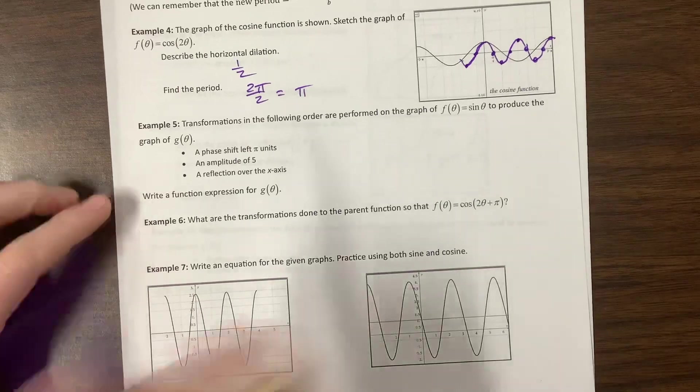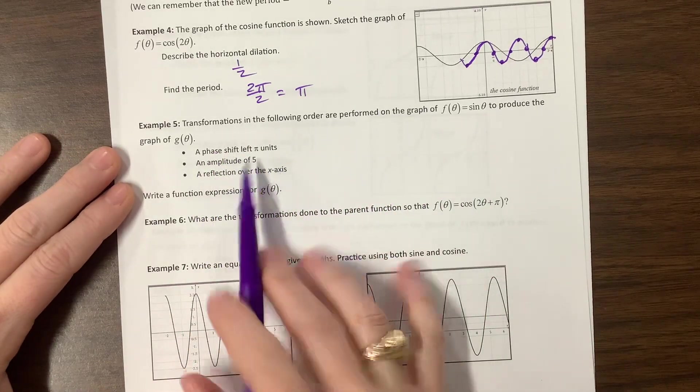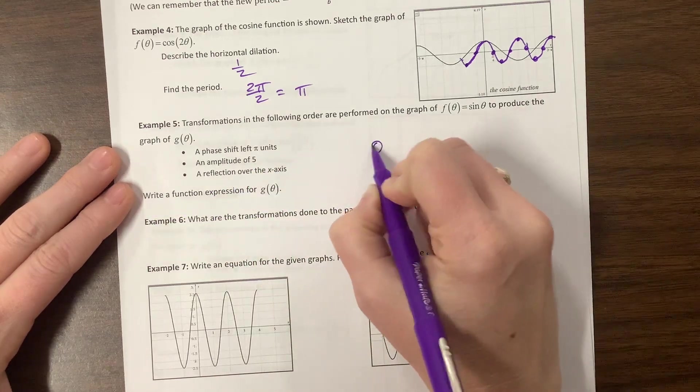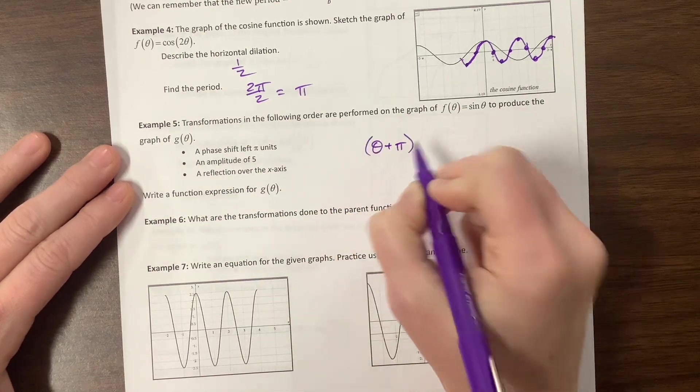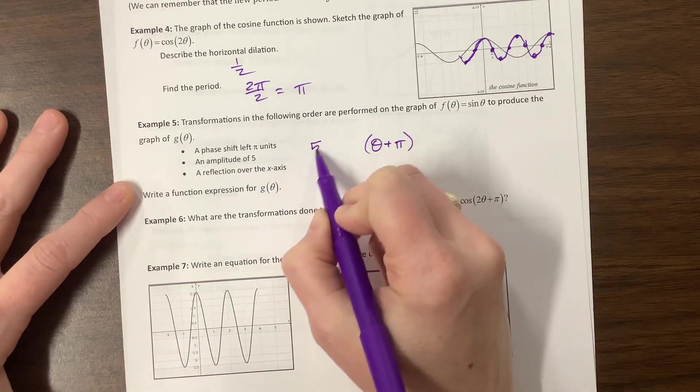Okay, so they're telling us we have a transformation in the following order: a phase shift left. So we're moving to the left, which means we will say plus, we will have theta plus pi, and an amplitude of 5, so that's going to come out front. Oh, and it's sine, okay, so it's 5 times sine.